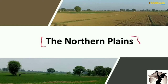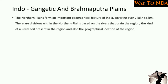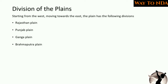In Northern Plains we will mainly study about the Rajasthan Plain, Punjab Plain, Ganga Plain, and Brahmaputra Plain. These are the subdivisions of the Northern Plains, also called as Indo-Gangetic and Brahmaputra Plains. The Northern Plains are an important geographical feature of India and they cover almost around seven lakh square kilometers of the total area.